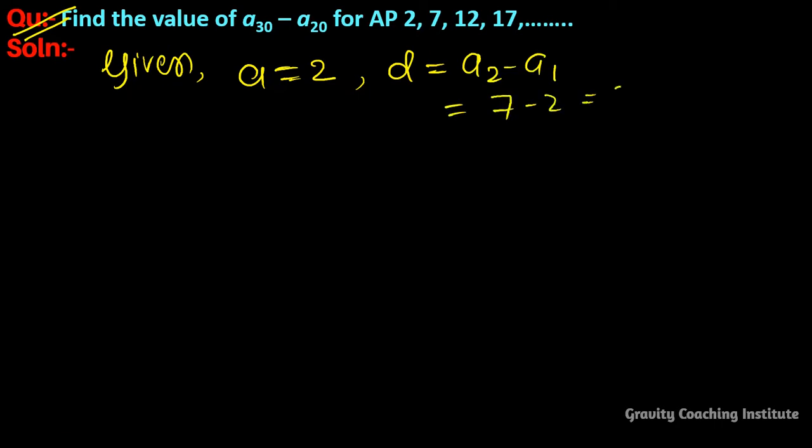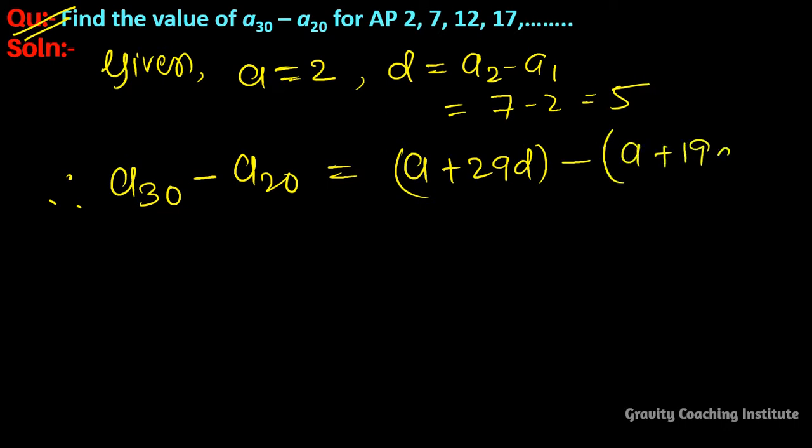So therefore, a₃₀ (30th term) minus 20th term, so is equal to... a₃₀th term equals a plus 29d, and a₂₀th term means a plus 19d, so equal to a plus 29d...